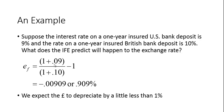We calculate: one plus 0.09 (the U.S. rate) divided by one plus 0.10 (the British rate), minus one, gives us approximately negative 0.00909, or about negative 0.909% — just under negative 1%. Using the approximation of 9% minus 10% gives negative 1%, which is reasonably close. We've essentially used nominal rates as a proxy for inflation rates.